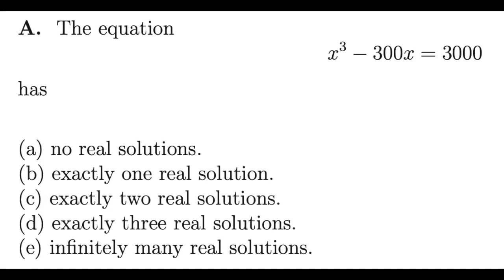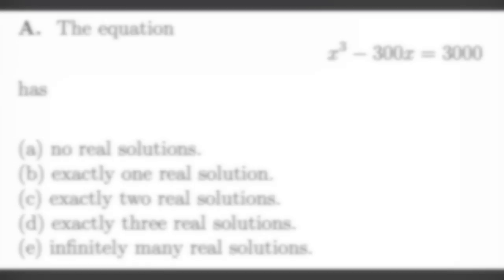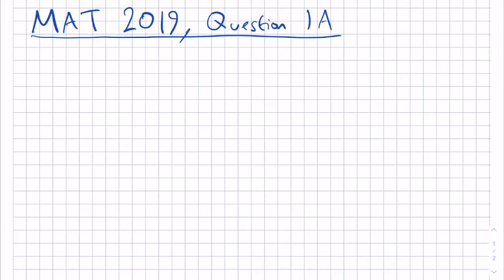The question says the equation x³ - 300x = 3000 has: (a) no real solutions, (b) exactly one real solution, (c) exactly two real solutions, (d) exactly three real solutions, and (e) infinitely many real solutions. So if we take a look at our equation, which is x³ - 300x = 3000,